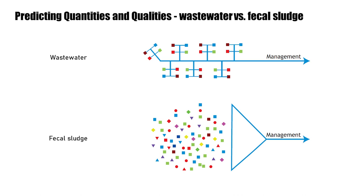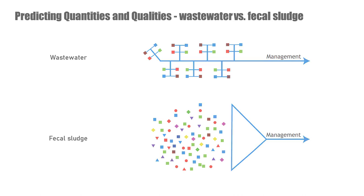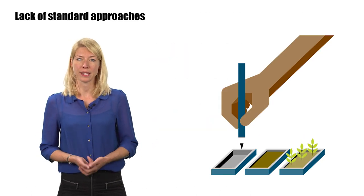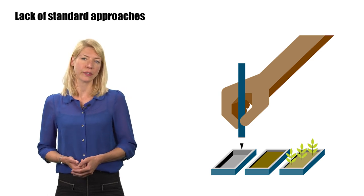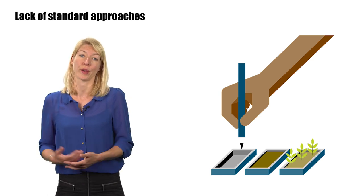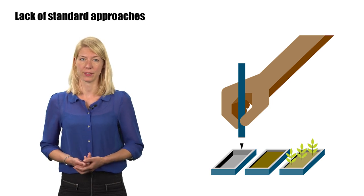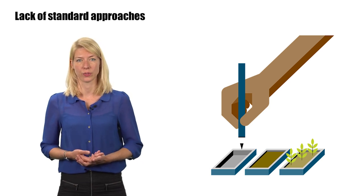Both quantities and qualities are highly variable, so there are no standard per capita values. In addition, fecal sludge arrives batch-wise to treatment, and is not homogenized during transportation. Without standard approaches to make estimates, fecal sludge treatment plants are frequently built under or over capacity, with negative impacts on public and environmental health, and financial resources.